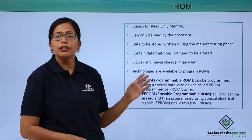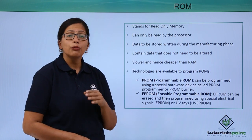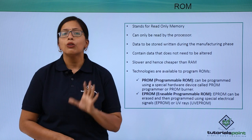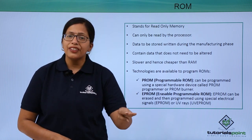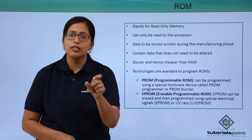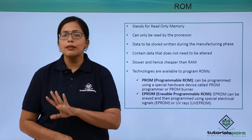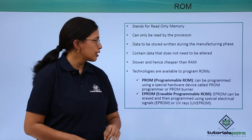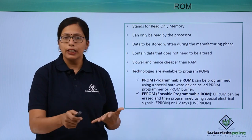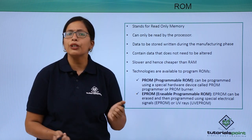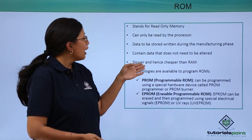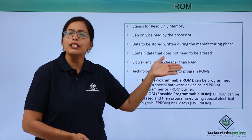Now let's see what is ROM, the read only memory. It can be read only by the processor. Data to be stored is written during the manufacturing phase only. The manufacturers will put whatever data, instructions, and programs are to be stored while manufacturing. Once it is installed in any system or put on any processor, the system cannot write anything on it or make any changes. So it contains data that does not need to be altered. For example, logarithmic tables, which will always remain the same. ROM is slower and hence cheaper than RAM.